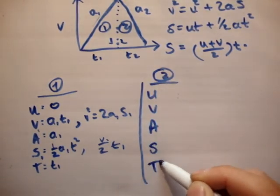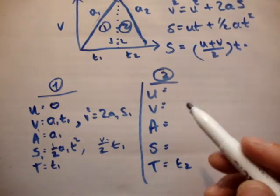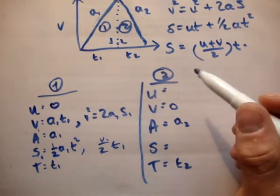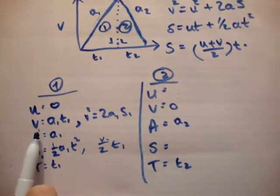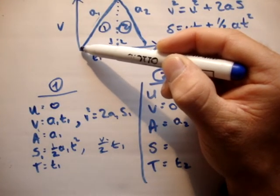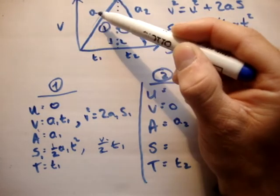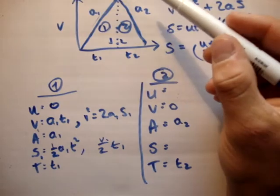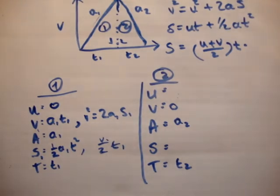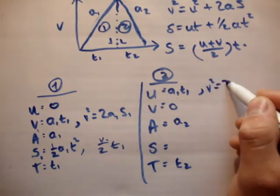For Part 2, we again write u, v, a, s, t. The time is t2, the acceleration is a2, the final velocity is 0, and the initial velocity is the final velocity of Part 1. This makes sense because the car accelerates up to a certain speed and then immediately starts to decelerate — so the final speed of Part 1 equals the starting speed of Part 2. That initial velocity is a1·t1, and v² = 2a1·s1 also applies.